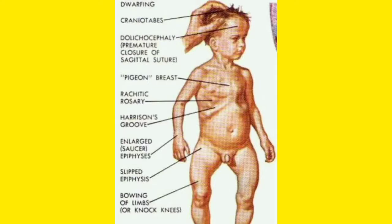Let me now discuss all the features of rickets together. First is dwarfing — the rickets child will have stunted, retarded growth because without calcium and phosphorus the bone does not get proper minerals. Next is craniotabes — the skull bones become thin due to decreased calcium and phosphorus, and this thinning of the cranium is called craniotabes.